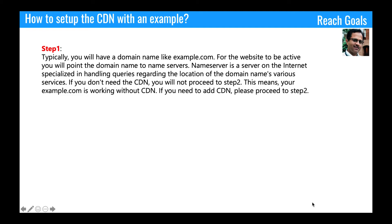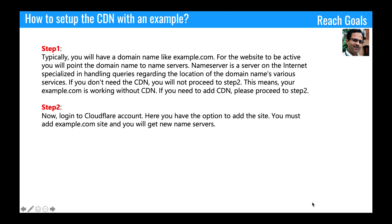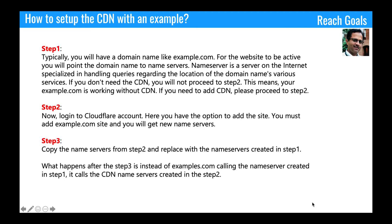This means your example.com is working without CDN. If you need to add CDN, proceed to step two. Log into the Cloudflare account — here you have the option to add a site. Add example.com and you will get new nameservers. Copy the nameservers from step two and replace the nameservers created in step one. After step three, instead of example.com calling the nameserver from step one, it calls the CDN nameservers created in step two. This means your application is accessing the CDN servers rather than the origin server.